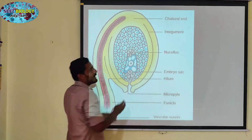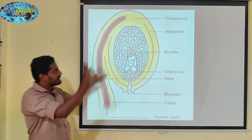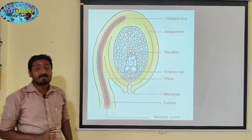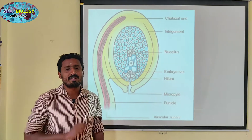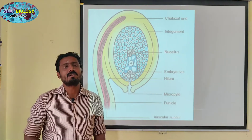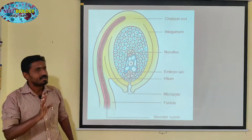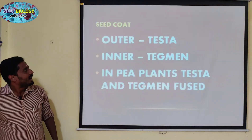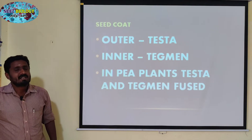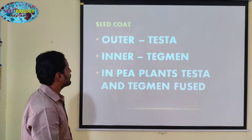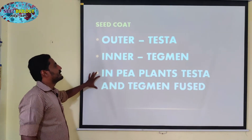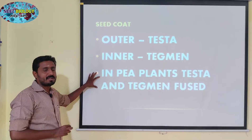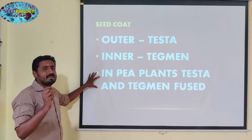The inner integument is the tegmen — the inner seed coat. So, when you know all the parts, you automatically know all the parts of the seed. In P-plants, if you look at this, we can see the testa and the tegmen. In P-plants, the testa and the tegmen are fused.